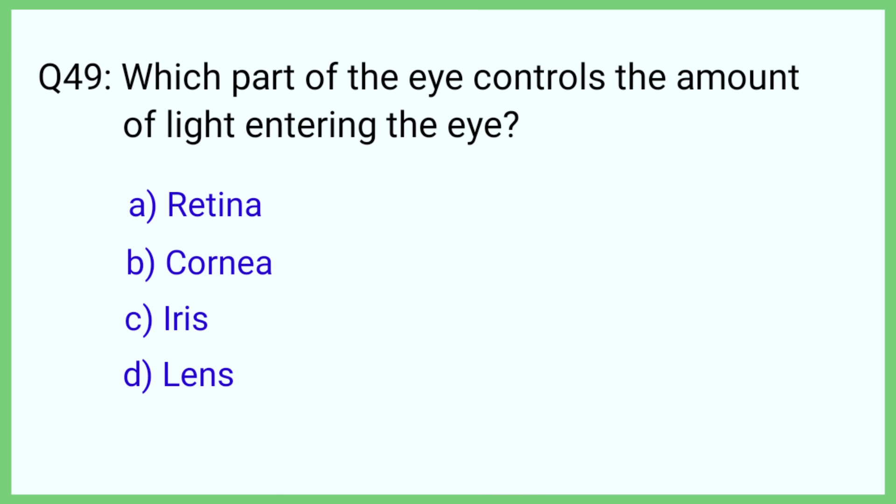Question number 49. Which part of the eye controls the amount of light entering the eye? The correct answer is option C: Iris.